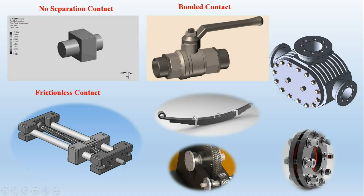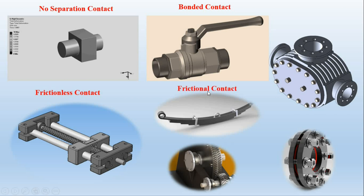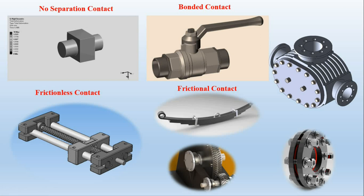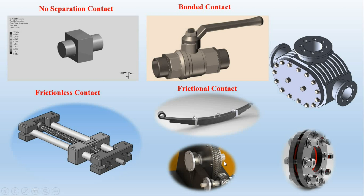For frictionless contact, the coefficient of friction mu equals zero. Now for frictional contact: a leaf spring is a good example, since it depends on friction between the friction pads — you can define the coefficient of friction and simulate the leaf spring. Another example of frictional contact is a gear pair, where the gears interact with each other with some coefficient of friction.